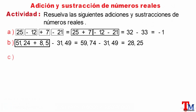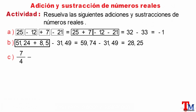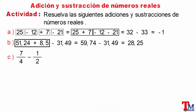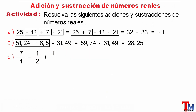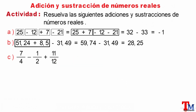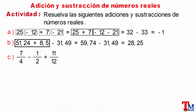Literal C: 7/25, minus 1/5, plus 11/12. In this case, we have the addition and subtraction of rational numbers — basically fractions. This will be the same by determining the least common multiple between the denominators, which would be 12.